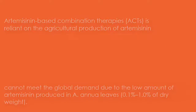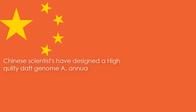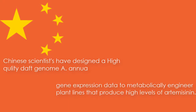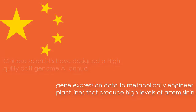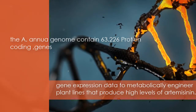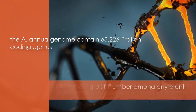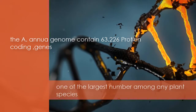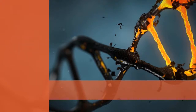Chinese scientists have now managed to design a high-quality draft genome sequence of A. annua, using this information along with gene expression data to metabolically engineer plant lines that produce high levels of artemisinin. The A. annua genome contains 63,226 protein-coding genes — one of the largest numbers among any known plant species. Previous efforts to increase artemisinin yield had been hampered by the absence of a reference genome and limited information about the genes involved in regulating drug synthesis.